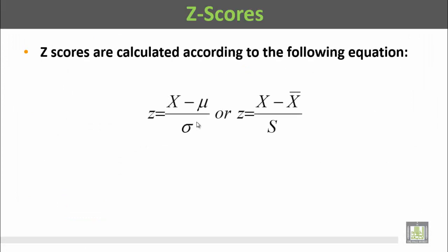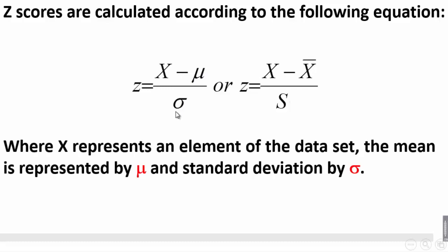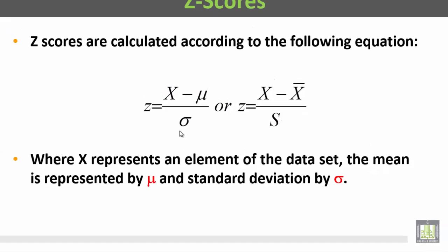Z scores are calculated according to the following equation: z is equal to x minus mu over sigma, or z is equal to x minus x-bar over s. يمكن حساب z score من خلال المعادلة التي تنص على أن z تساوي القيمة المراد تحويلها ناقص المتوسط الحسابي مقسوماً على الانحراف المعياري. When x represents an element of the data set, the mean is represented by mu and the standard deviation by sigma.